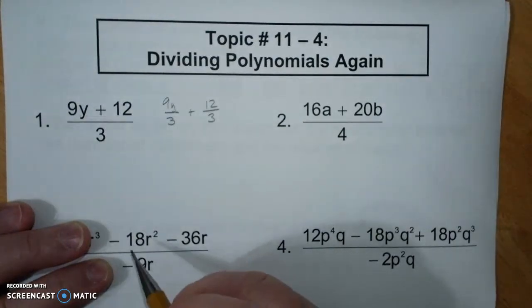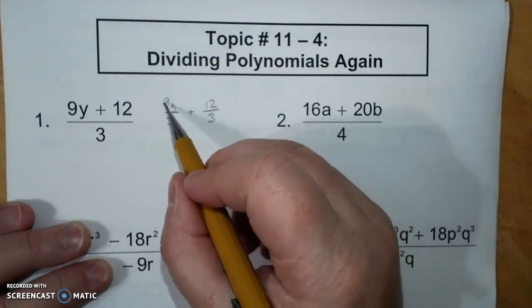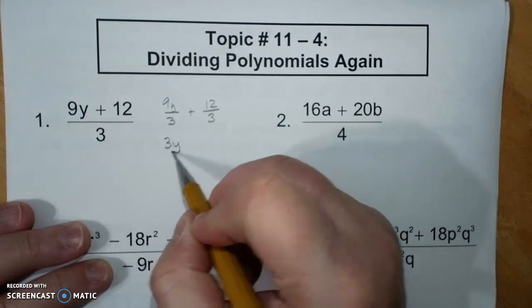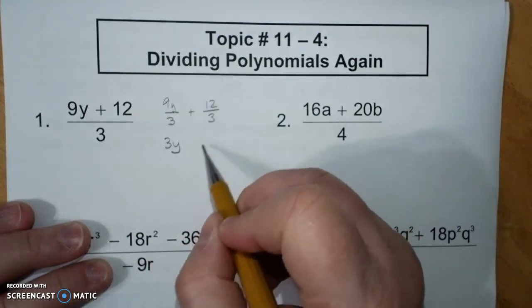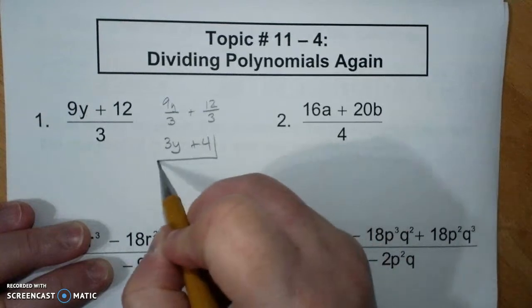And when you do that, you would factor this and have 3y, and divide 12 by 3 and have 4, and that is your final answer.